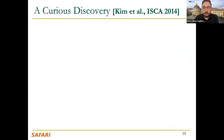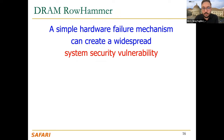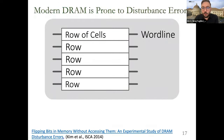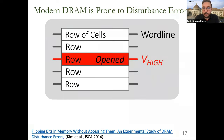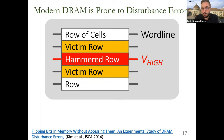The key takeaway from the ISCA 2014 paper is that one can predictably induce errors in most DRAM memory chips — a simple hardware failure mechanism that can create a widespread system security vulnerability. DRAM is organized as an array of rows, with each row containing kilobytes of data. To access data you perform a row activation, opening a row. To access another row, you close the first. When you do this many times, you start seeing bit flips in neighboring rows, breaking memory isolation — a key security primitive.